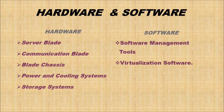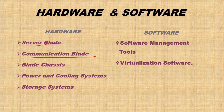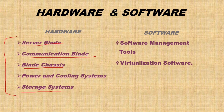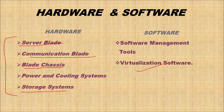There are hardware and software components because this is essentially a computer system. In hardware, we have a server blade, a communication blade, a blade chassis, power and cooling systems, and a storage system — everything a computer can have, but all sophisticatedly balanced. These are managed with certain software like software management tools and virtualization software.